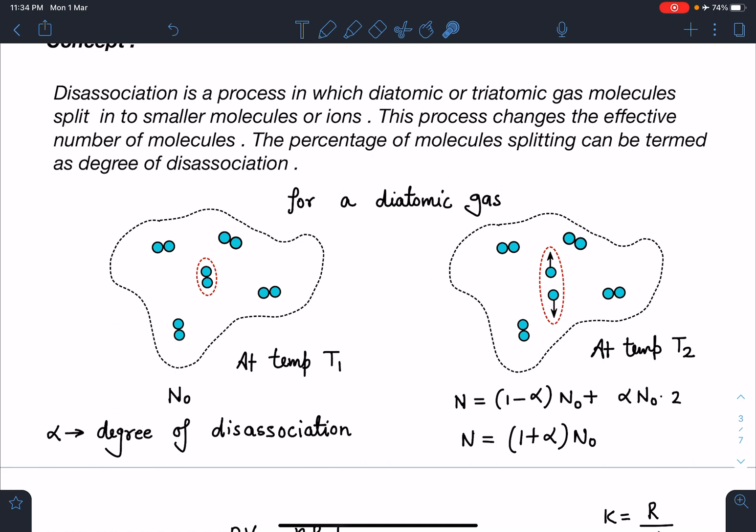Finally, when a certain percentage α is the degree of dissociation, whatever are the left over - the fraction (1-α) is the fraction of total N₀, so (1-α)N₀ is the diatomic gas molecules which are left. Similarly, αN₀ have dissociated so they convert into monatomic gas, double of that number, so αN₀ times 2. When we add these two and simplify, the total number of gas molecules becomes (1+α) times N₀.